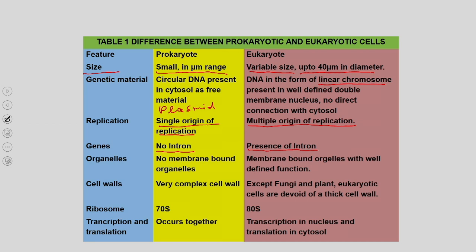Regarding organelles, there are no membrane-bound organelles in prokaryotes, whereas membrane-bound organelles are present in eukaryotes. This gives a significant advantage to the eukaryotic system, and the relevance of having membrane-bound organelles will be discussed in subsequent lectures.